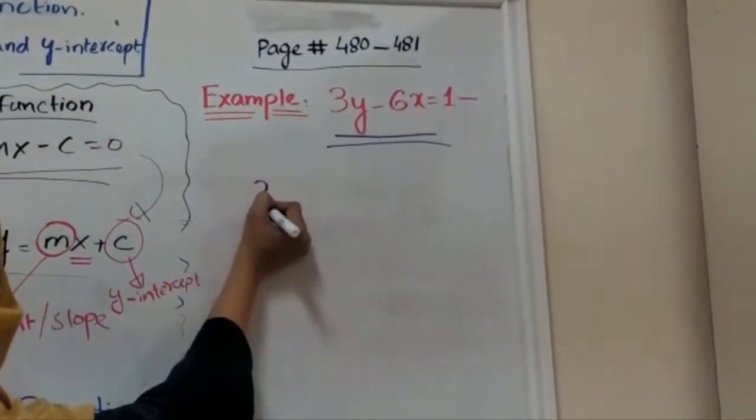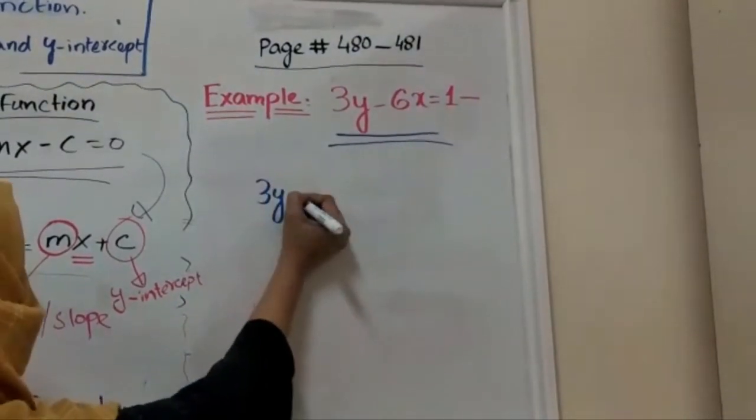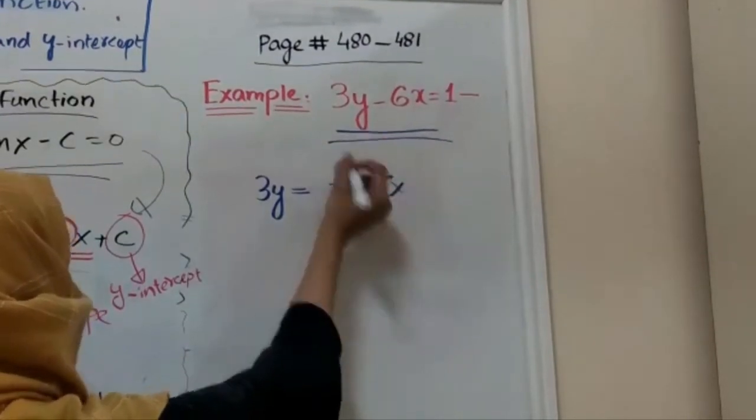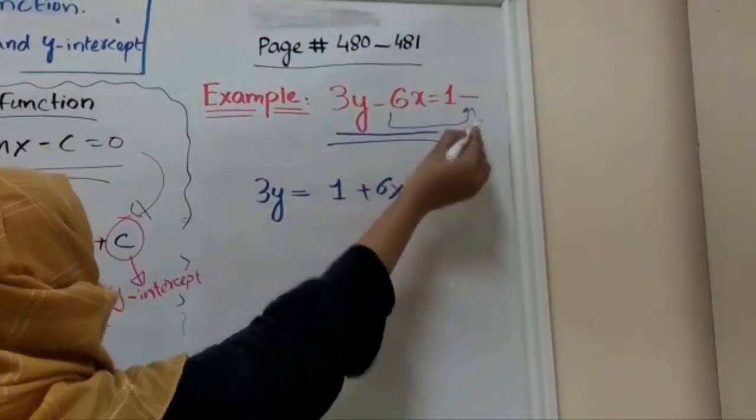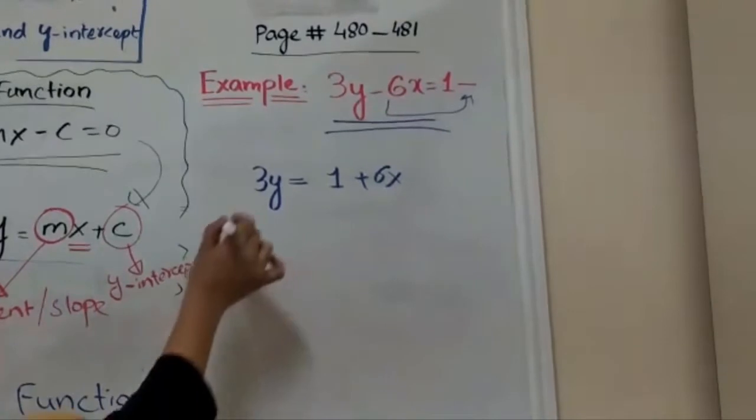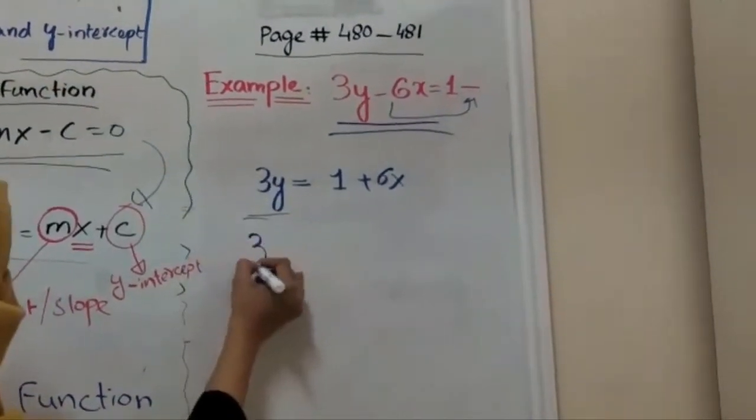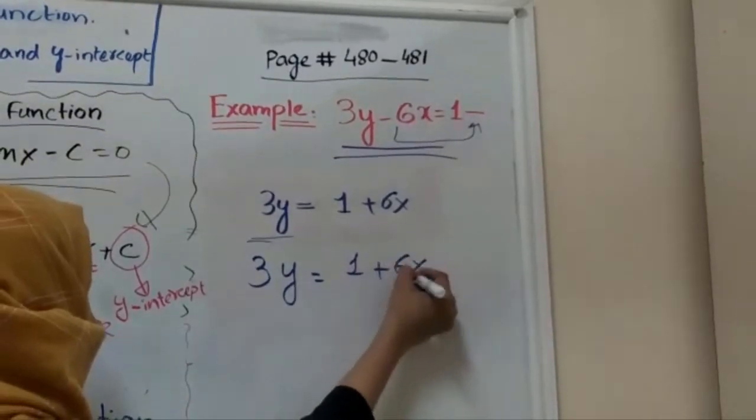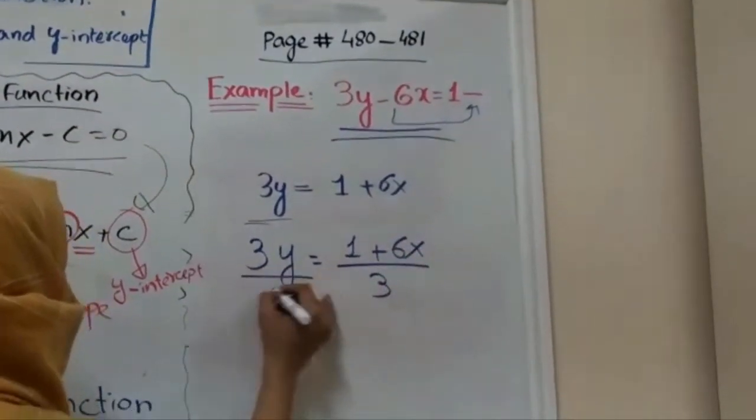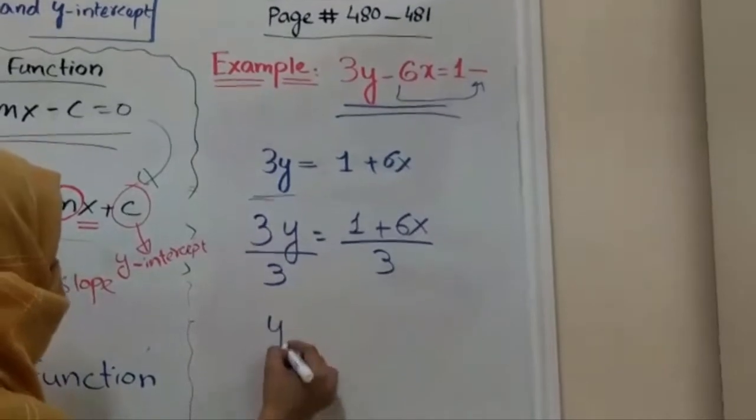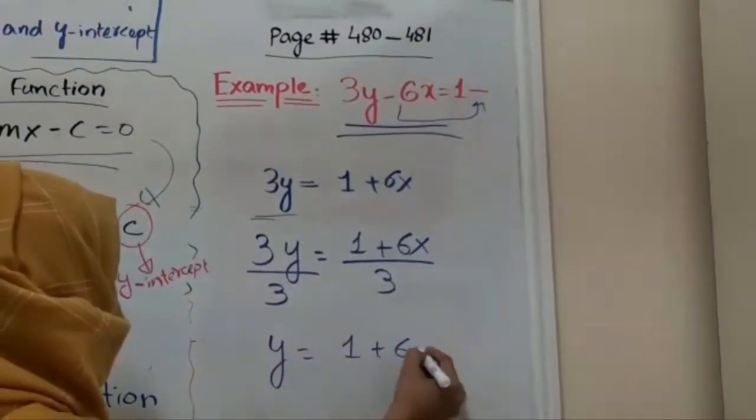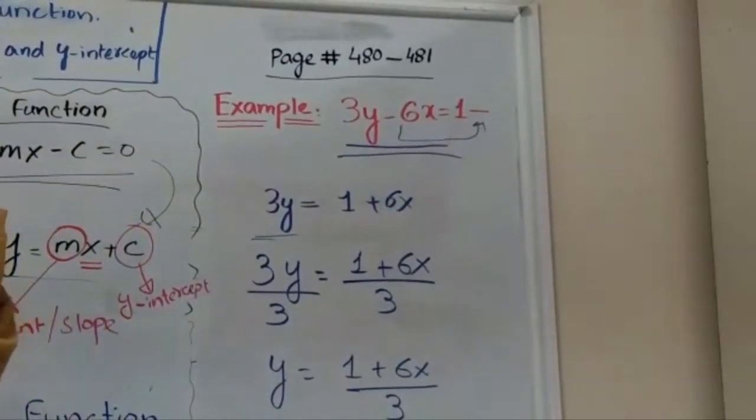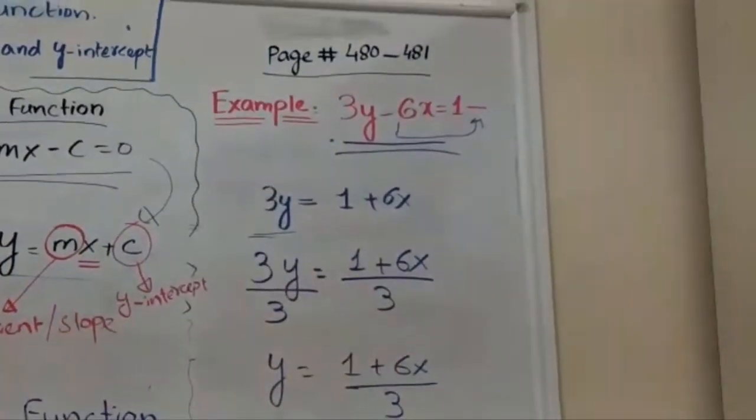So in step 1: 3y equals 1 plus 6x. You have to move it on the other side. Now we have to make y subject. How will you find? By dividing 3 on both sides, you make y subject. Right, now this equation is an explicit expression of equation 1.